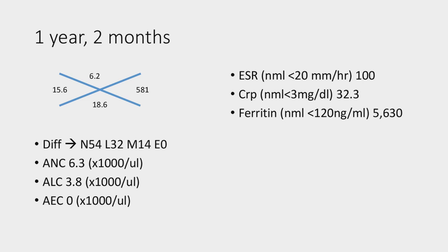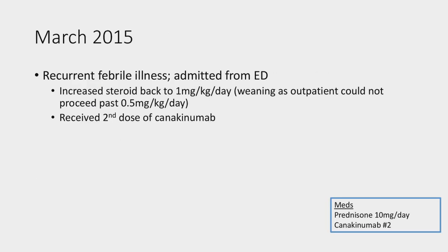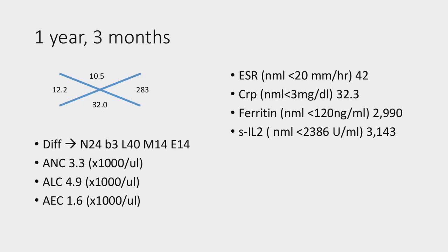The labs at that hospitalization showed very high ferritin, high inflammatory markers, persistent anemia, and persistent thrombocytosis. One month later, she came back with another febrile illness, was admitted from the emergency department. The steroid had been weaned but was bumped back up to one milligram per kilogram per day, and she received the second dose of canakinumab. Labs were largely unchanged with continued high sed rate, high ferritin. The soluble IL-2 receptor came back at about 3,100.